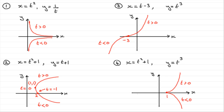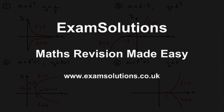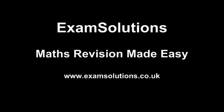I hope that's given you some idea of how to sketch parametric equations by taking t equals 0 and then looking at the behaviour of x and y as we take positive values of t and negative values of t. Good luck with any sketches that you happen to be asked to do. Thank you.